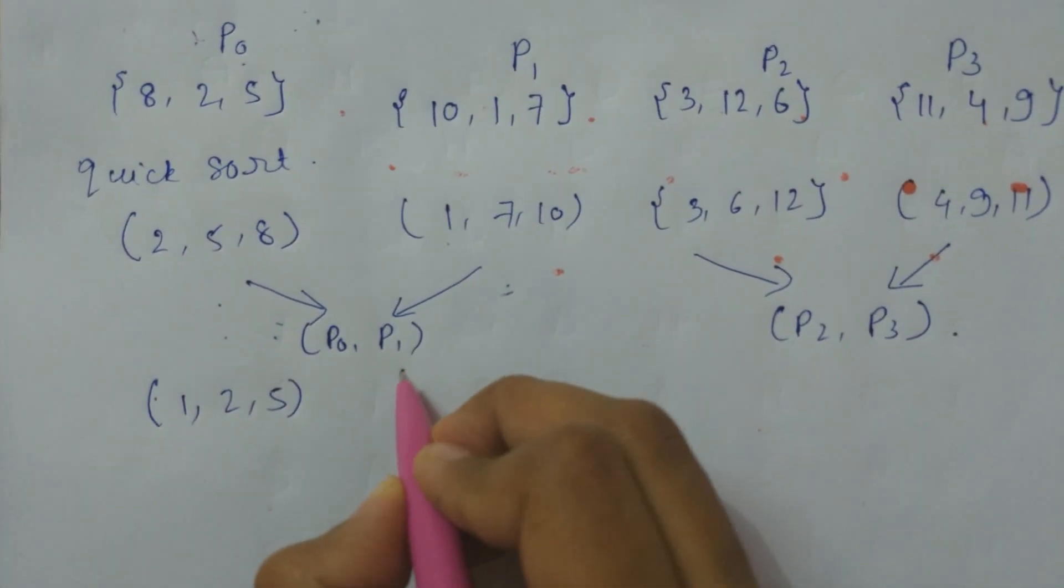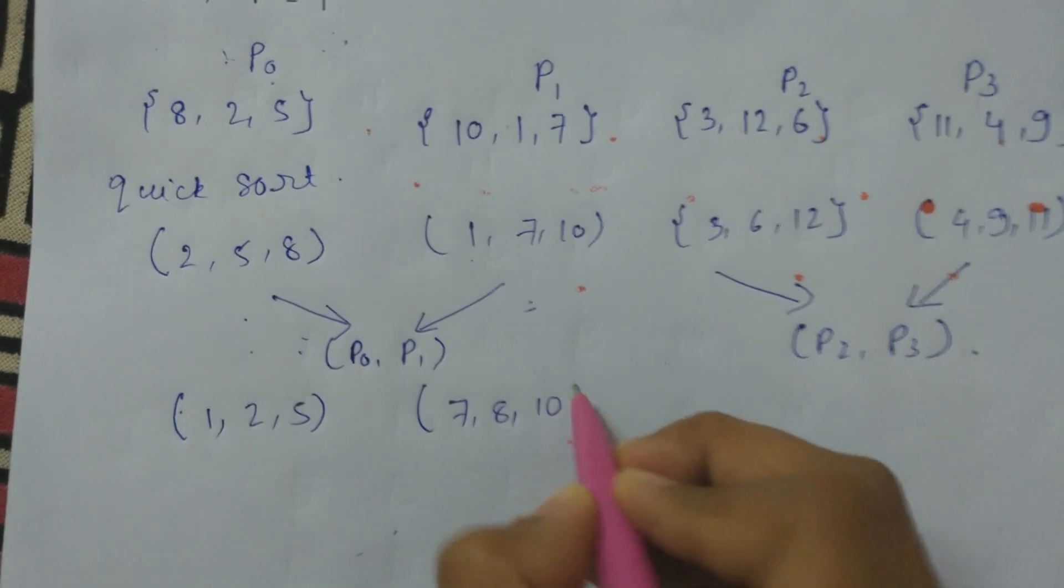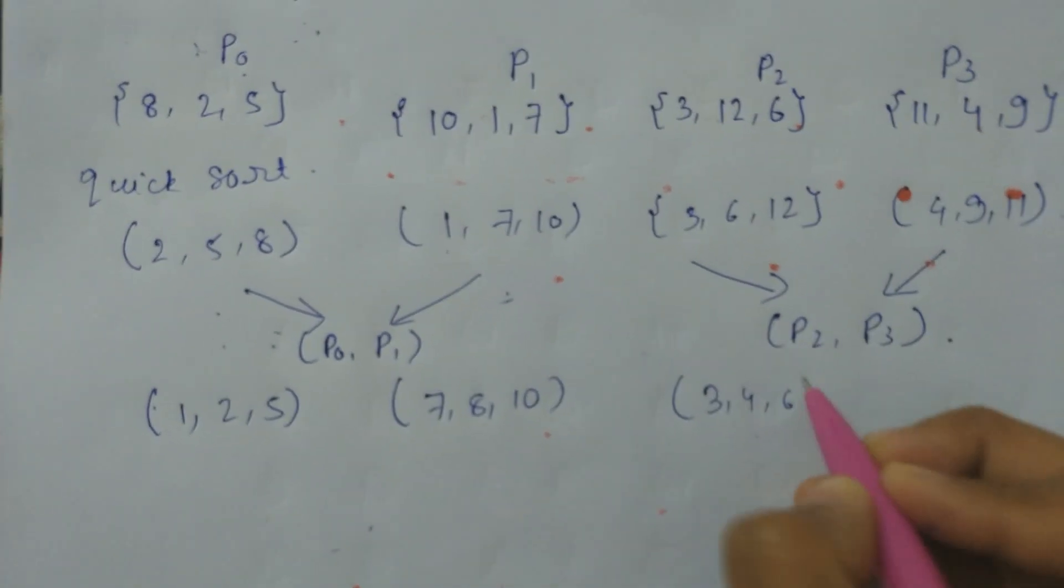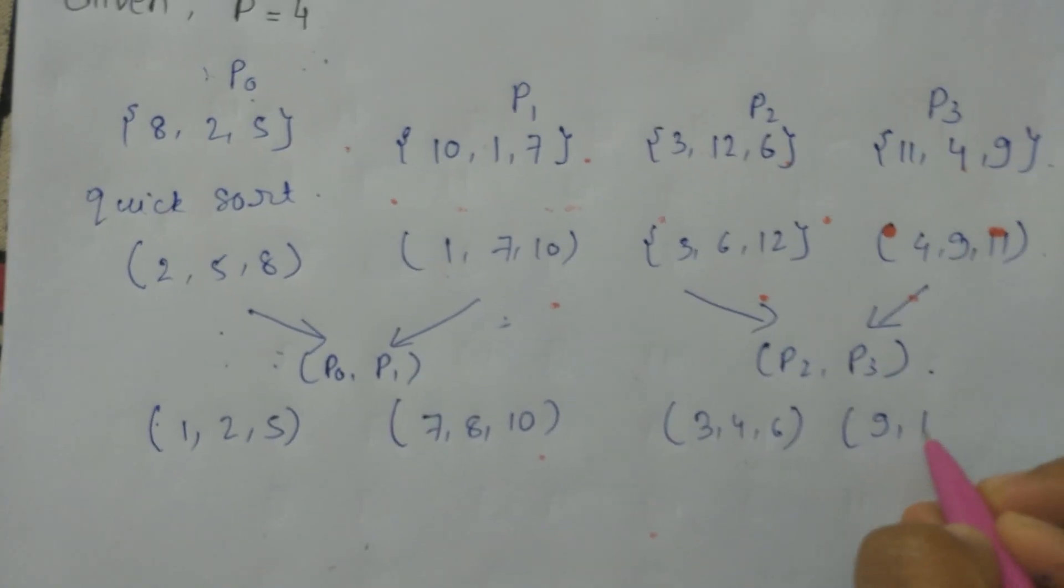And the remaining others: 7, 8, 10 over here. And similarly here also: 3, 4, 6 and 9, 11, 12.